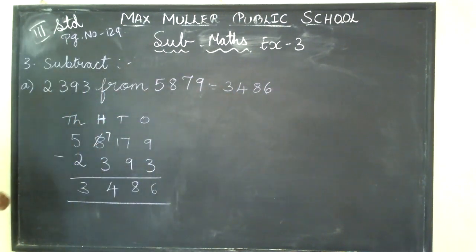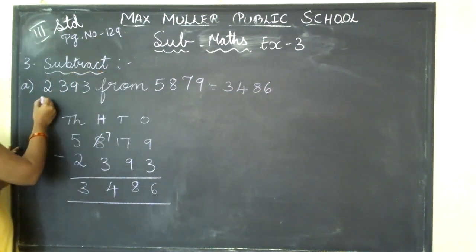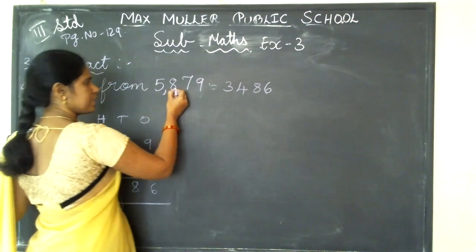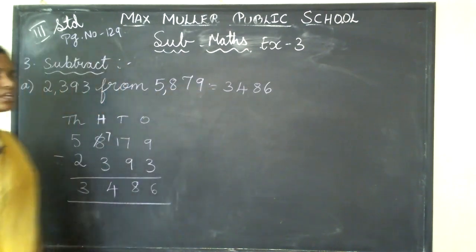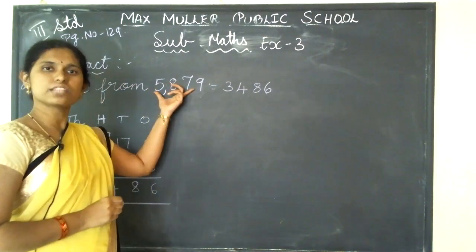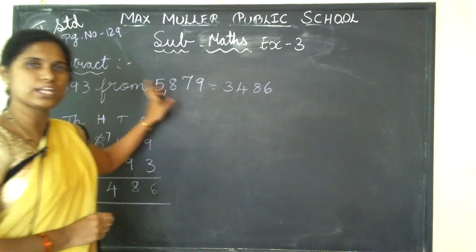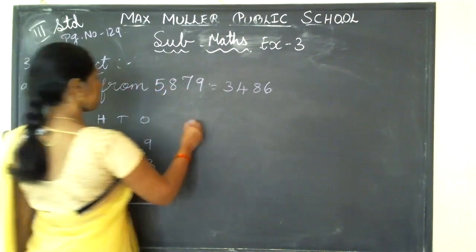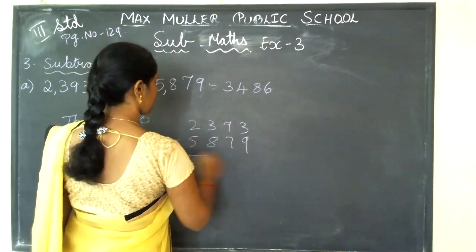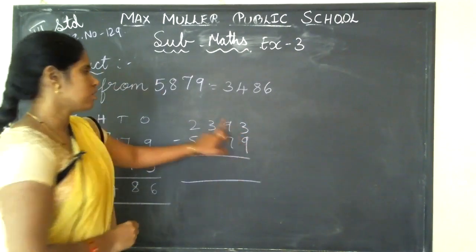Understood? I will explain this once again. See here — the heading says subtract, and they have given 2,393 from 5,879. So here, which is the bigger number compared to this one? 5,879 is the bigger number. If you write this one first and then this one, can you easily subtract? From a smaller number, can I minus a bigger number? See here: 3 minus 9 — no.